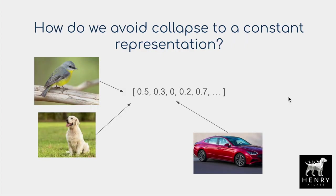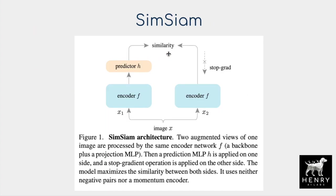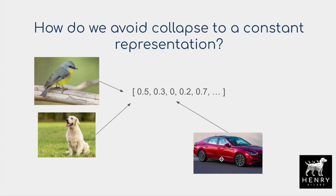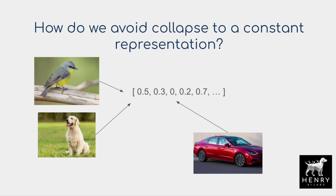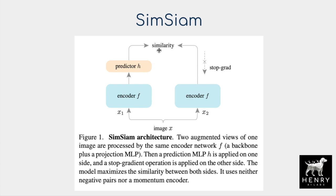One interesting question with Siamese architectures and contrastive learning is: why don't the representations just collapse to the same constant output? Say we have a bird image, a dog image, and a car image — maybe the network just collapses to producing the same vector representation regardless of input, because it maximizes similarity. The SimSiam paper explores how SimCLR, MoCo, Bootstrap Your Own Latent, and the SWAV clustering algorithm each try to avoid this collapse through different architectural changes. In the end, they show all you really need is the stop gradient that prevents gradients from flowing back into the alternative view encoder.